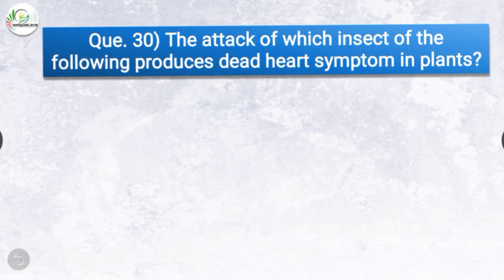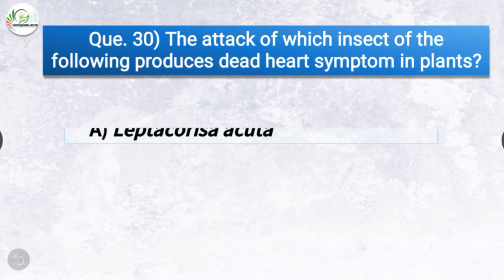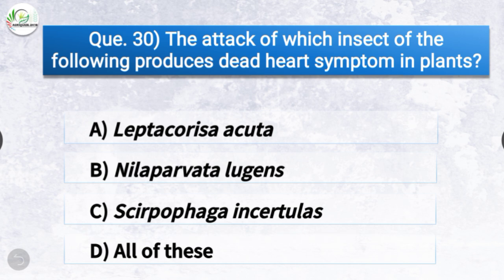Question number thirty: The attack of which insect produces dead heart symptom in plants? The options are Leptocorisa acuta, Nilaparvata lugens, Scirpophaga incertulas, or all of these. The correct answer is option C, Scirpophaga incertulas — the attack of Scirpophaga incertulas produces dead heart symptom in plants.